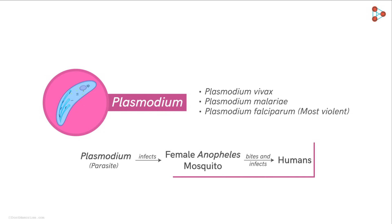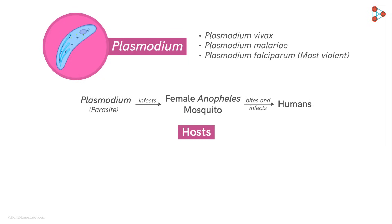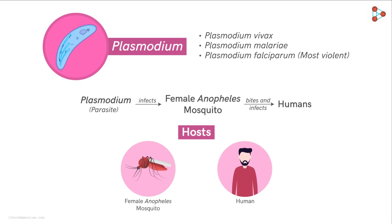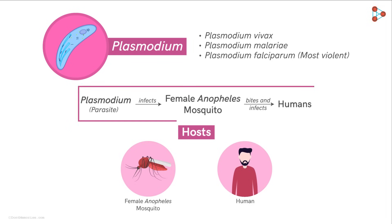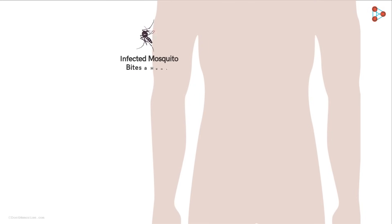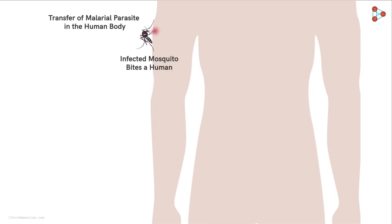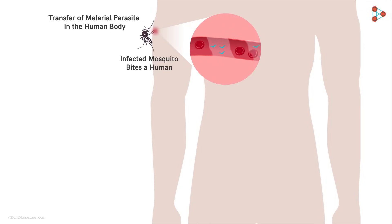The complete life cycle of the malarial parasitic protozoa involves two hosts: the first is the female Anopheles mosquito, and the second is the human host. It all begins when an infected mosquito bites a human, transferring the malarial parasite into the human body. In order to enjoy her blood meal, the female Anopheles mosquito secretes saliva into the human bloodstream to prevent blood coagulation, and it is with this secretion that the parasite gets a chance to enter the human body.